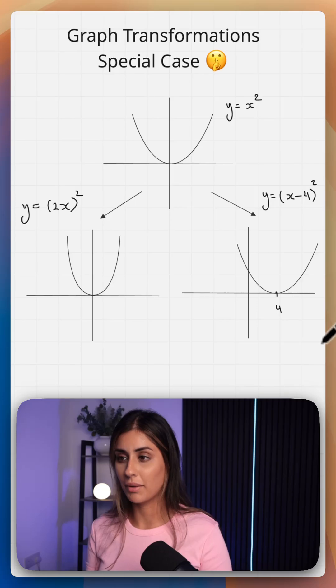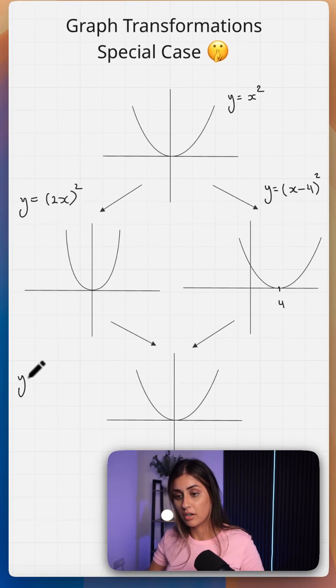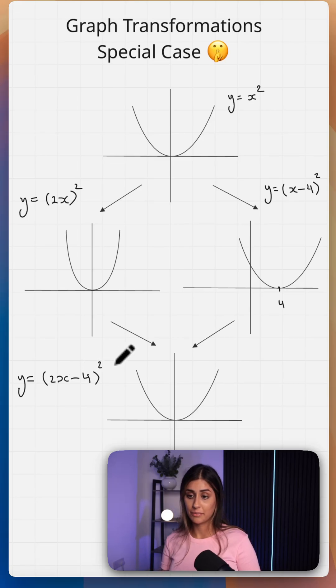Now, what happens if we combine these two transformations? Let's say now we want to sketch the graph of 2x minus 4 squared. So I said that graph transformations happen in order of BIDMAS,